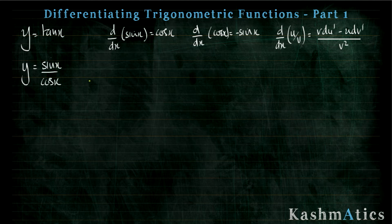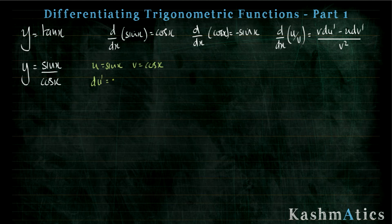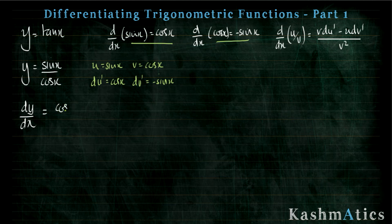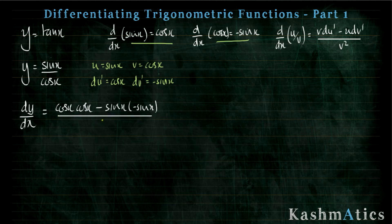The first thing we do is rewrite y equals tan x as y equals sin x over cos x. Now we apply the quotient rule: u equals sin x and v equals cos x, so du equals cos x and dv equals minus sin x. Putting it all together: v du is cos x times cos x, take away u dv which is sin x times minus sin x, all over v squared which is cos squared x. The top becomes cos squared x plus sin squared x, all divided by cos squared x.